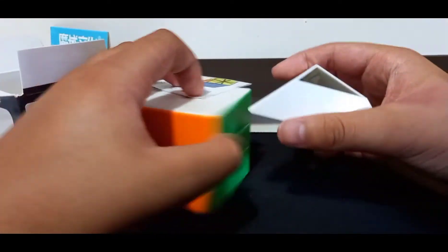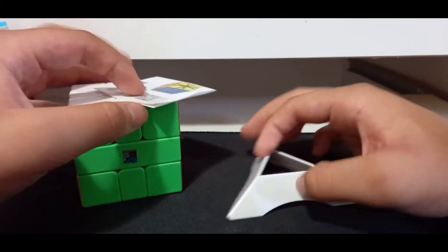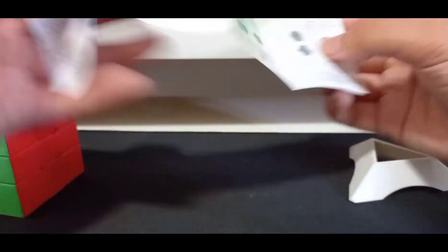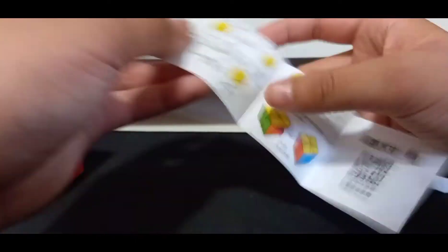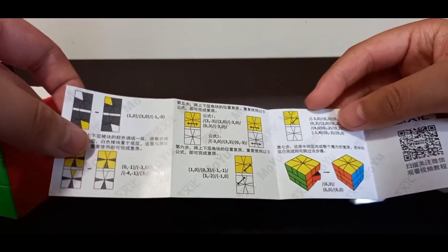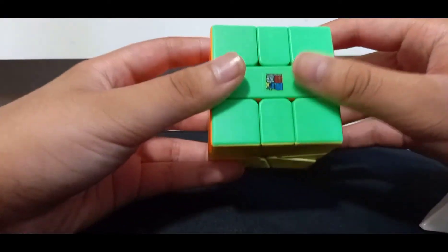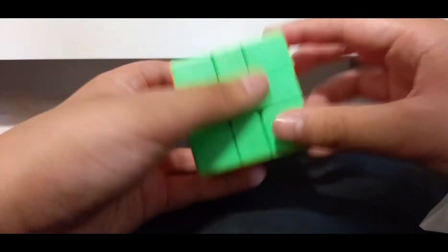And here is a stand I guess, and here's a pamphlet in Chinese and the tutorial or the notation, I don't know. I'm going to see it later. So this is the MoYu Meilong Square-1.